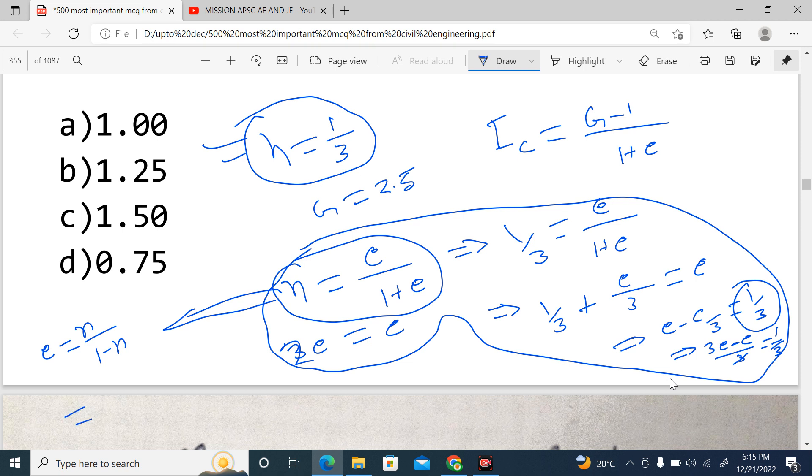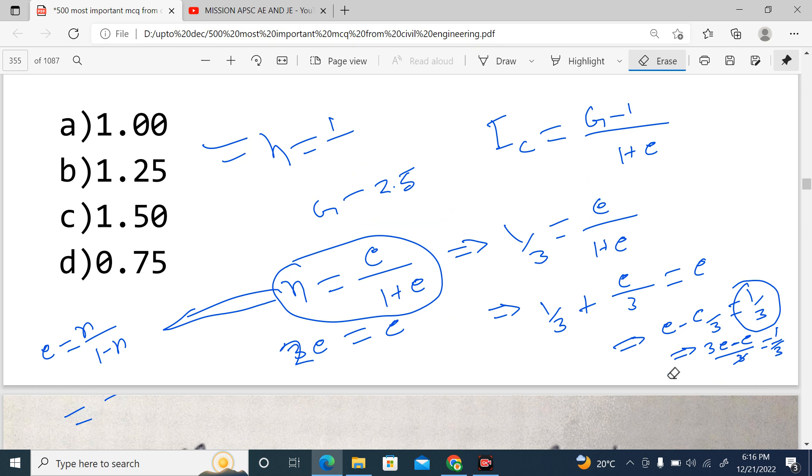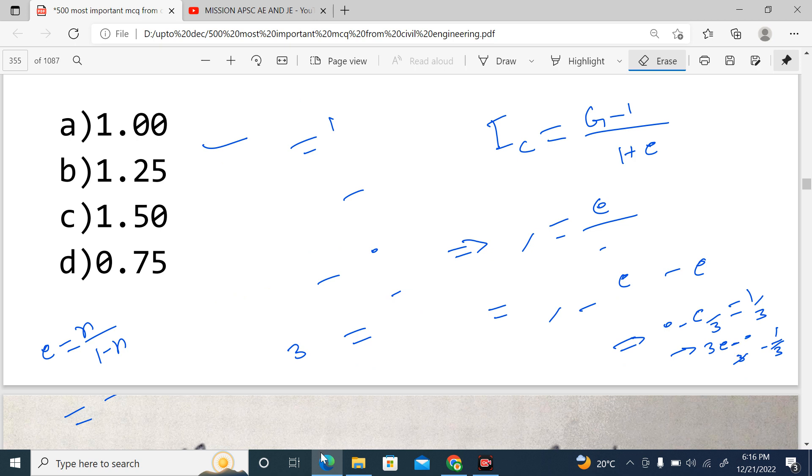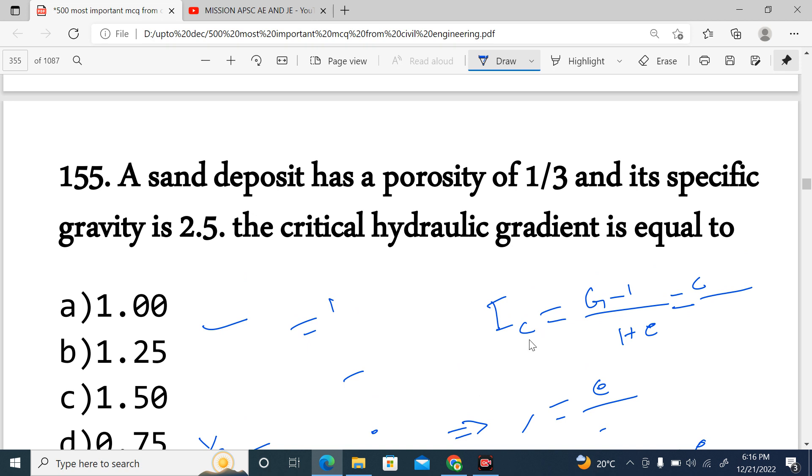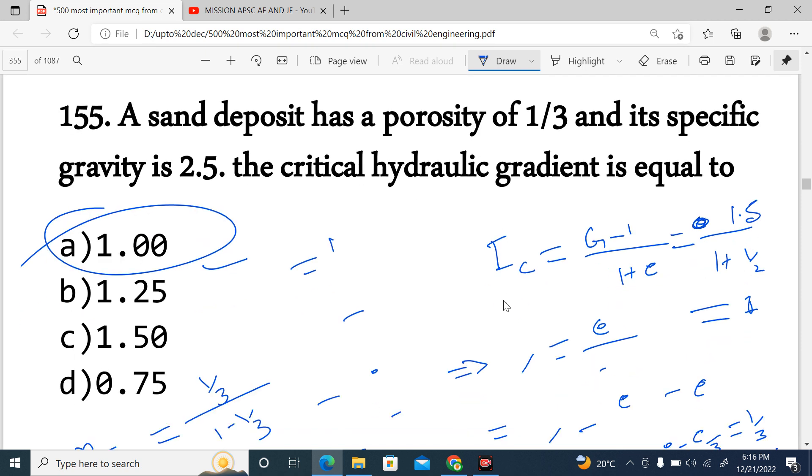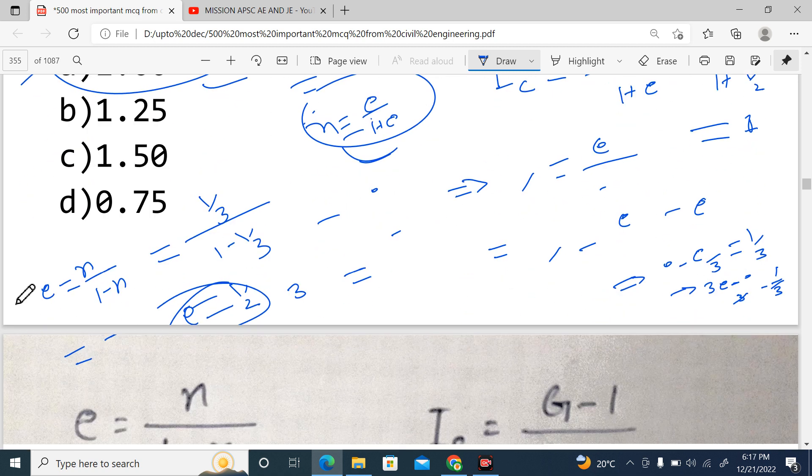What is the n value? It is given as 1 by 3. Instead of applying the complex formula, we can apply another formula: void ratio is nothing but n divided by 1 minus n. So e equals n divided by 1 minus n. N is given as one-third, so 1 divided by 3 divided by 1 minus one-third. In one simple step we get e value as half. Once we get the value of half, I can substitute: I critical equals 2.5 minus 1, that is 1.5, divided by 1 plus half, which is again 1.5. Ultimately, critical hydraulic gradient will be 1. That is the answer.